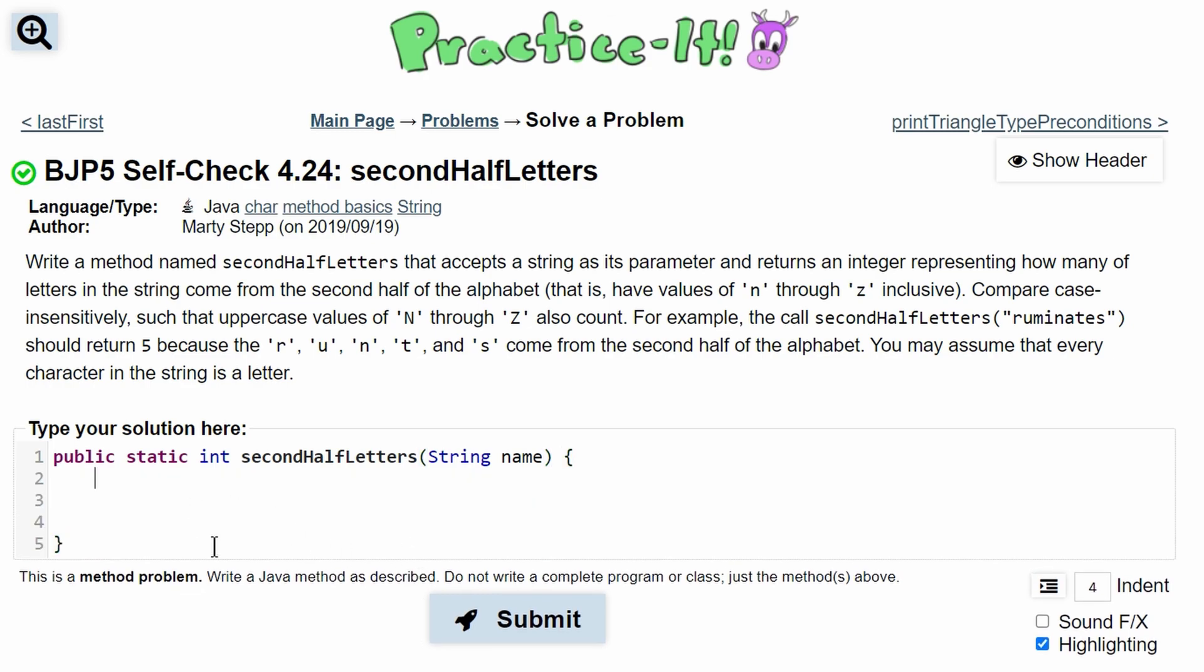Now we have our method so we can write inside of it. We know we need to return the integer of how many times the second half of the alphabet is mentioned in our code. So we will have a count. We'll say int count equals 0. And then we need a for loop.